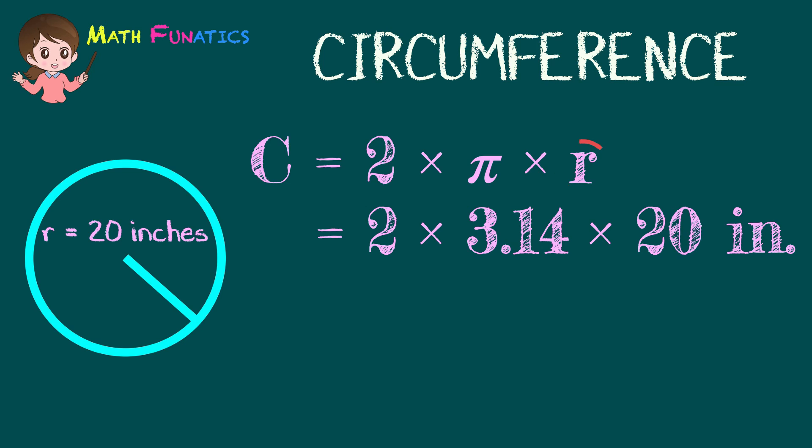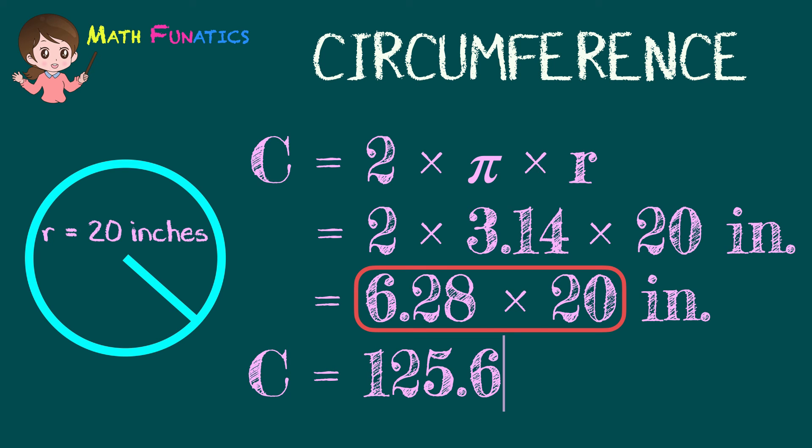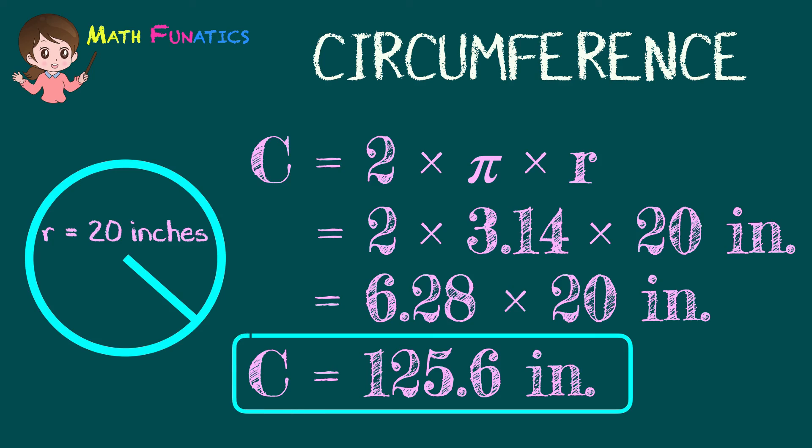Then multiply 2 and 3.14 to get 6.28, and bring down times 20 inches. Get the product of 6.28 and 20. The answer is 125.6 inches. So if the radius is 20 inches, the circumference is 125.6 inches.